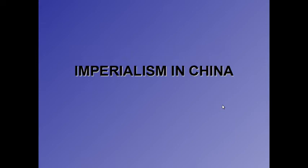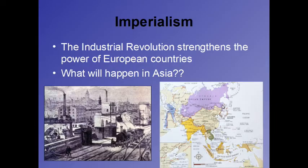Let's get started. We have talked about China before, but we haven't checked in since the 1700s or so. First off, the Industrial Revolution was strengthening the power of European countries. Those European countries had gone through the Industrial Revolution and were fighting over Africa, the Americas — there was all this scrambling for territory — and India, which had already been conquered. From this map, the question is: what will happen in Asia?